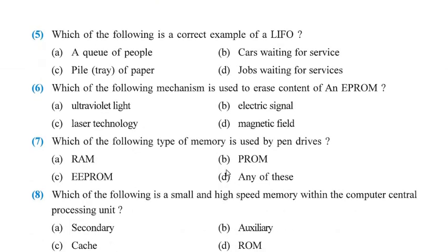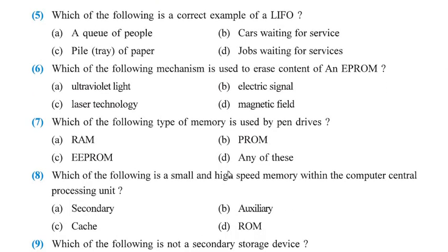Question number 5: Which of the following is the correct example of LIFO? LIFO means last in, first out. The answer is tray of papers or pile of paper. If you create a bunch of papers, the paper you put in last will come out first — last in, first out.